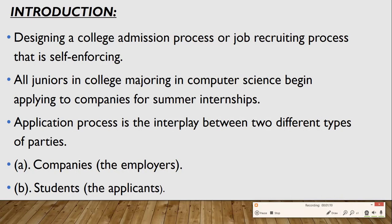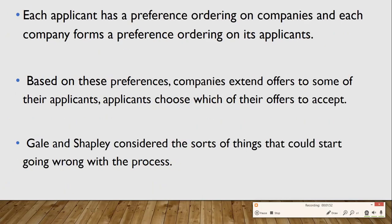The application process would be an interplay between two different types of parties: the companies or employers, and the students or applicants. Each applicant would have a preference ordering of the companies — they would have already decided which company they prefer over others. Similarly, the companies would have a preference ordering of their applicants. Based on these preferences, companies would extend offers to some applicants, and the applicants would then choose which offers to accept.